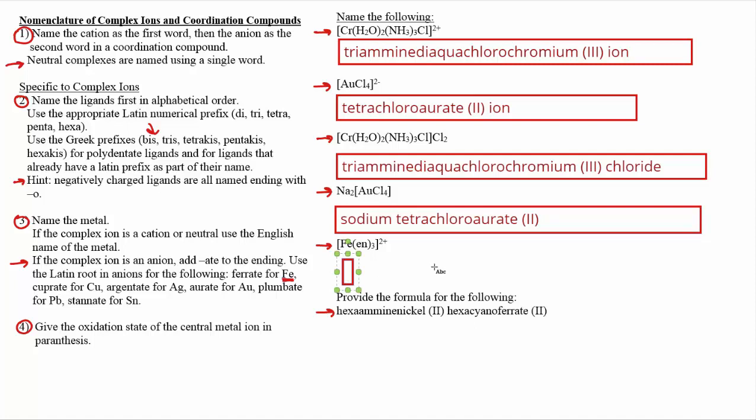And so in this case, we start off by naming the ligands. So we've got three ethylenediamines, so that's going to be tris, not tri, ethylenediamine. Notice this is tricky. Amine as a ligand, just plain old ammonia, amine has two M's, but in ethylenediamine, it's just got a single M here. So tris(ethylenediamine), and then we name the metal.